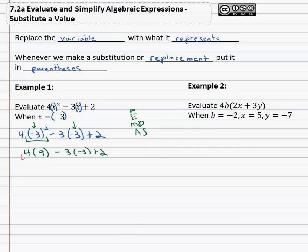Now we're ready to multiply and divide from left to right. There's no overlap between the multiplication. So 4 times 9 is 36, negative 3 times negative 3 is positive 9, plus 2.